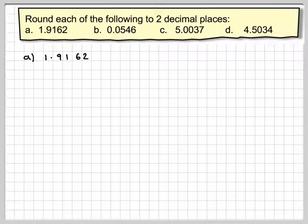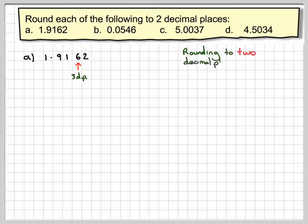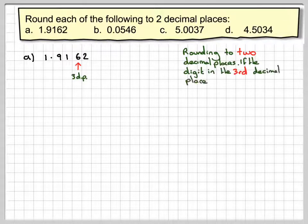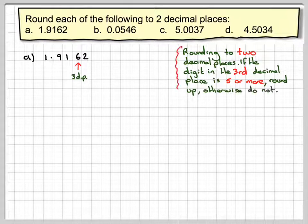Writing down the first one, because we want to round off to two decimal places, we look at the third decimal place in each case. So rounding to two decimal places, if the digit in the third decimal place is five or more, we round up, otherwise we do nothing.